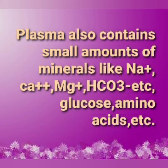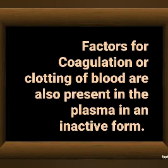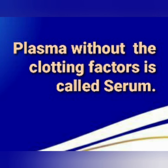Plasma also contains small amounts of minerals like sodium ions, calcium ions, magnesium ions, bicarbonate ions, etc., and also glucose, amino acids, etc. Factors for coagulation or clotting of blood are also present in the plasma in an inactive form. Plasma without the clotting factors is called serum.